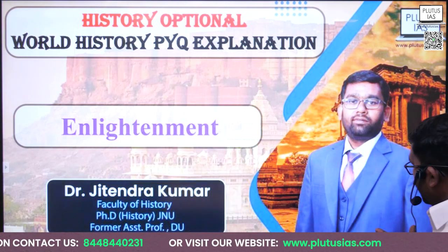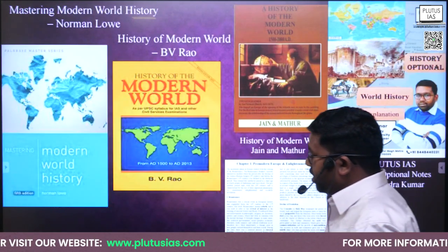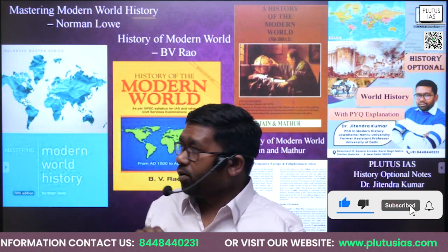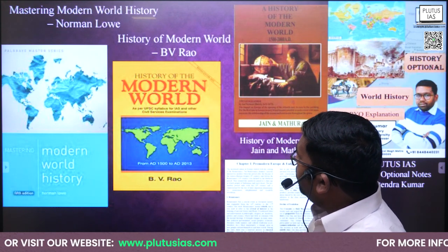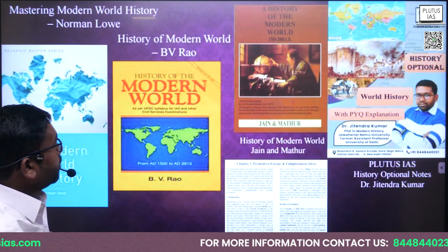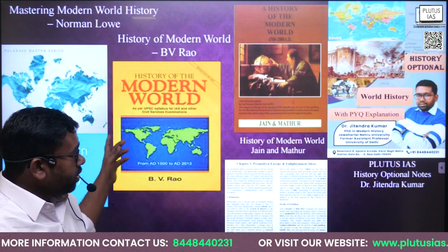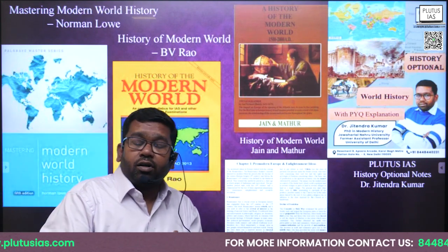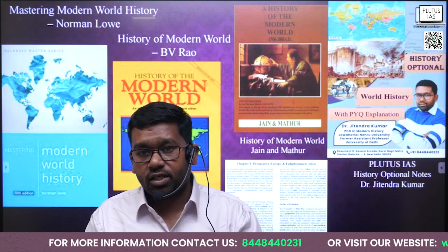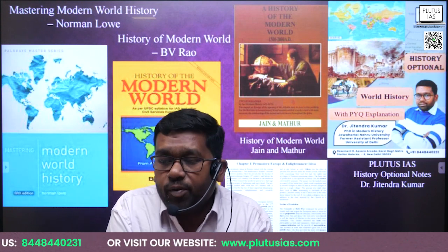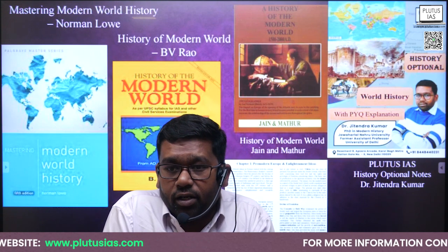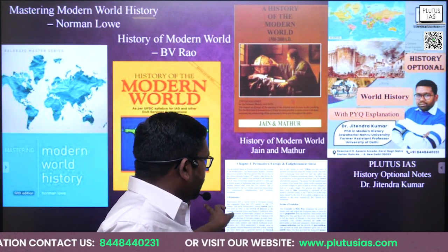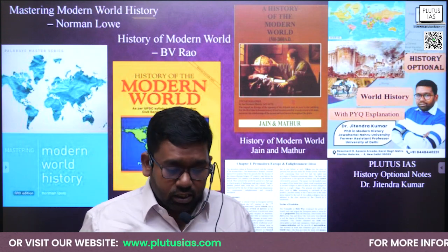Let us first discuss the syllabus and recommended books for History Optional. Three books are recommended: 'Mastering Modern World' by Norman Lowe, 'History of the Modern World' by BB Raw, and 'History of the Modern World' by Jain and Mathur. Reading one of these books and solving PYQs is enough. Alternatively, Plutus IAS history notes prepared by the instructor, along with PPTs discussed in class, are sufficient.